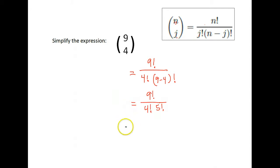Now we could simplify this by hand. Remember, factorial means you start at that number and you go down, multiplying by each number until you reach one. So nine factorial is nine times eight times seven times six times five times four times three times two times one. On the bottom, four factorial would be four times three times two times one, and five factorial would be five, four, three, two, one.